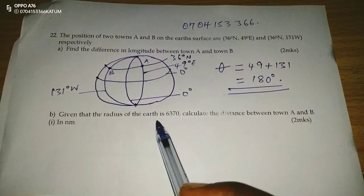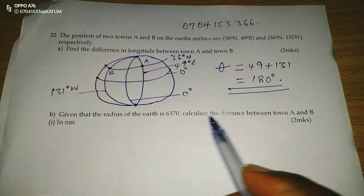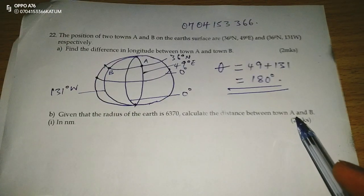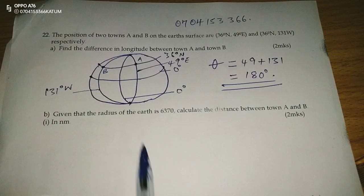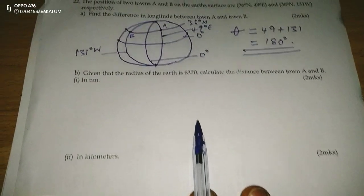Then given that the radius of the earth is 6370, calculate the distance between towns A and B in nautical miles and in kilometers.